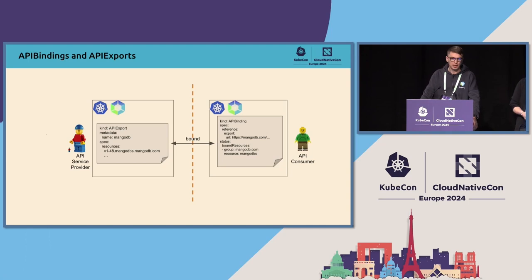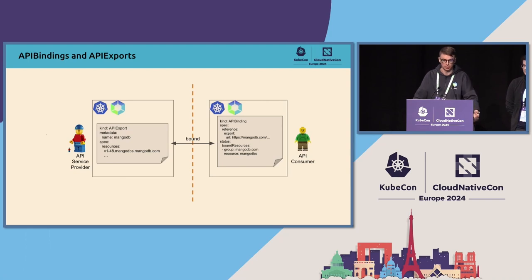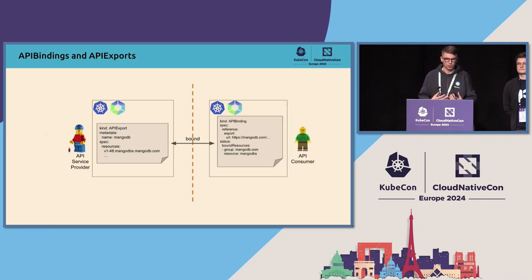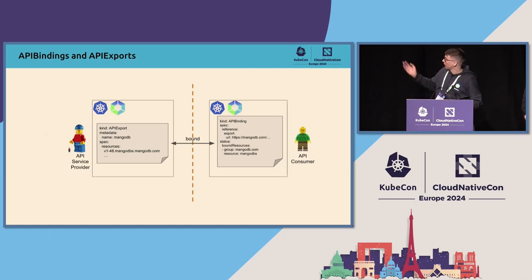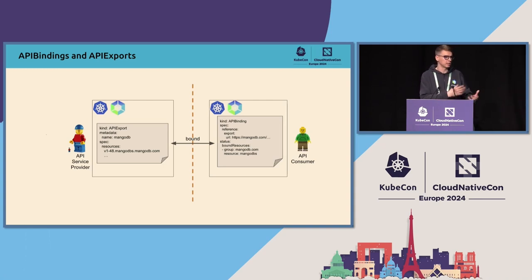KCP has way more features than this, but this is just one example of a use case — how you can solve a certain problem. Normally, when you operate Kubernetes cluster-based platforms, you have two personas in a mix: a user — your end-user developer who uses Kubernetes API, develops certain products like Crossplane or something else — and in this case uses MongoDB as a service provided by some other team. That other team is usually a platform team.